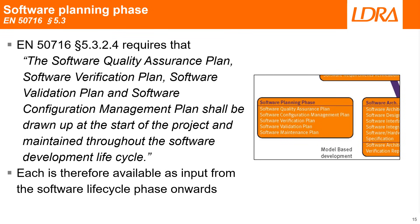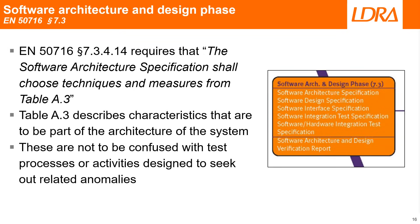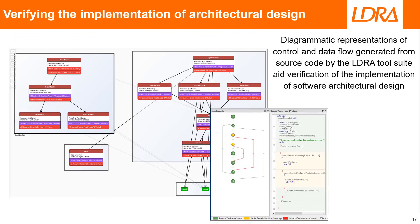Each is therefore available as input from the software lifecycle phase onwards. The architecture and design phase requires that the software architecture specification shall choose techniques and measures from Table A3, which describes characteristics that are to be part of the architecture of the system. These are not to be confused with the test processes or activities designed to seek out related anomalies. Static analysis tools have a part to play in the verification of the design in the form of control and data flow analysis of the code generated in accordance with it.